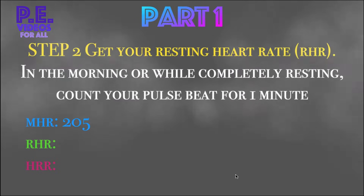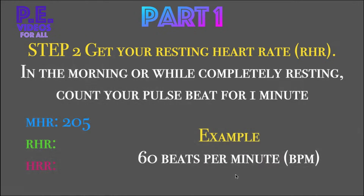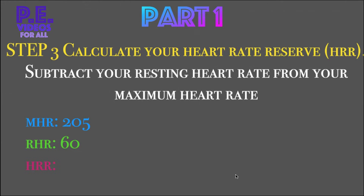Step two: get your resting heart rate. You can do this in the morning or while completely resting — count your pulse beat for one minute. Example result: 60 beats per minute. That will be your resting heart rate. Step three: calculate your heart rate reserve. To do this, you need to subtract your resting heart rate from your maximum heart rate. Example: 205 minus 60 equals 145 beats per minute. That will be your heart rate reserve.